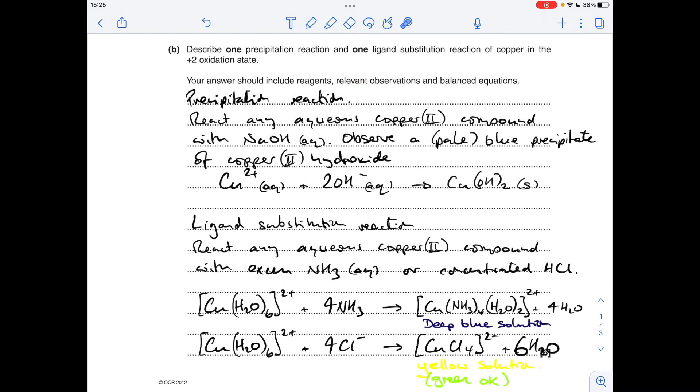So moving on to part B, the precipitation reaction, you'd take any aqueous copper 2 compound and react it with sodium hydroxide solution, and you'd observe a pale blue precipitate of copper 2 hydroxide. So I've just given this simplified equation for that one. You could give the more complicated one, which I'll read out in a second. But basically, any aqueous copper 2 compound is going to contain the aqueous copper 2 plus ion.